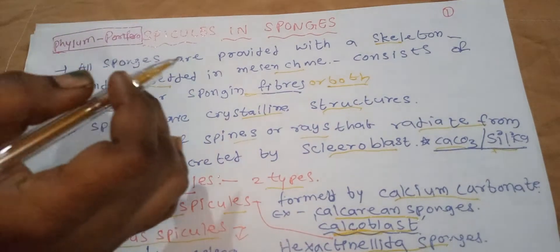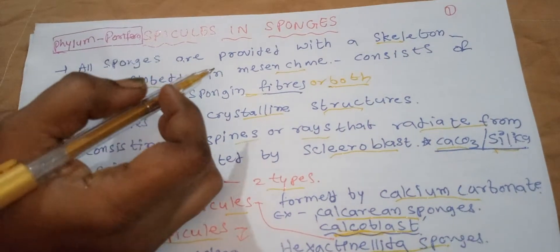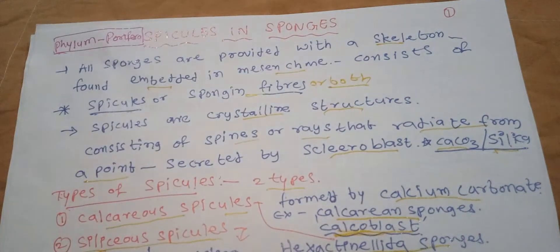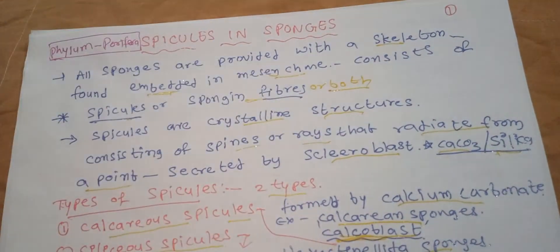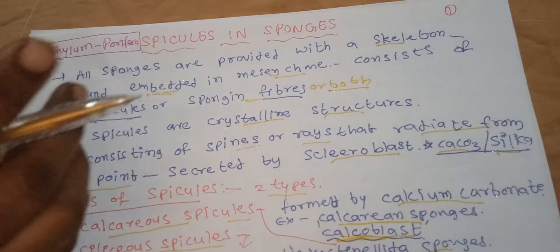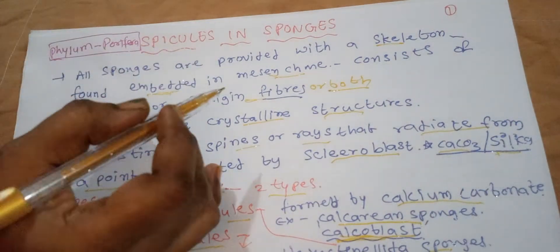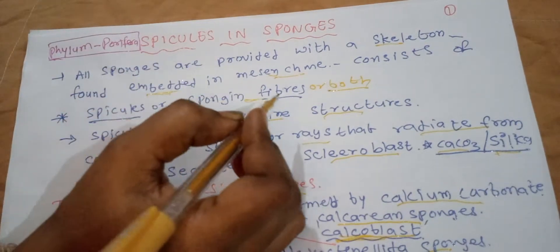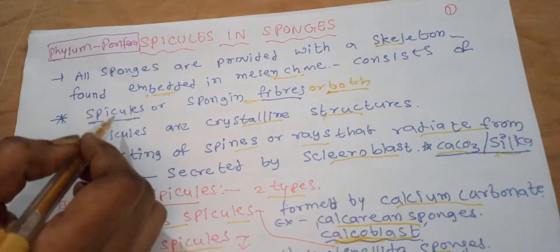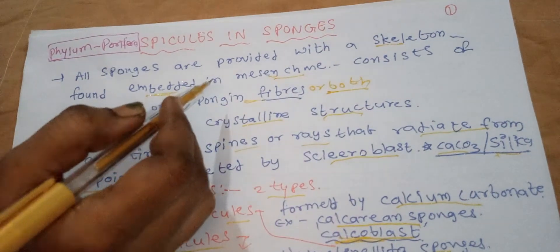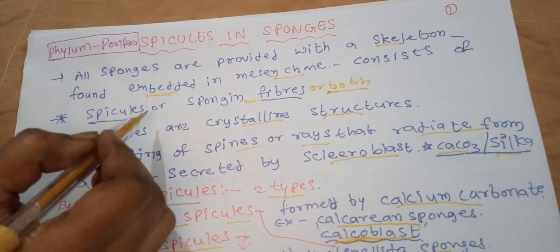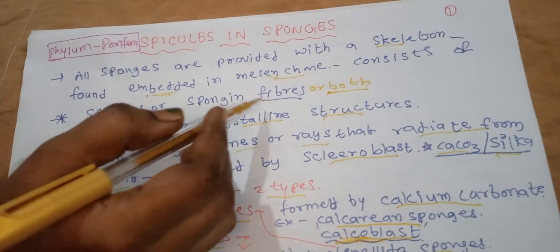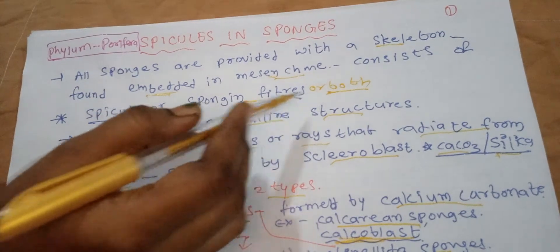Almost all sponges are provided with a skeleton, found embedded in mesenchyma. Mesenchyma consists of separate spicules or spongin fibers or both, all embedded in mesenchyma.